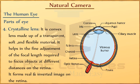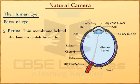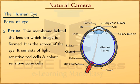Like a camera, our eyes also have a screen which is called the retina — a thin membrane behind the lens on which images form. It is the screen of the eye. It consists of light-sensitive rod cells and color-sensitive cone cells.